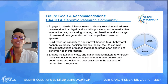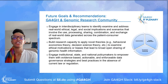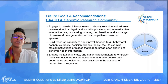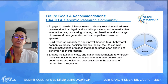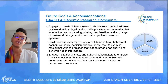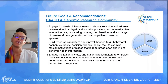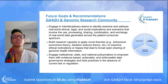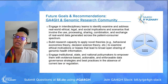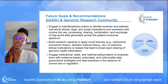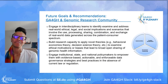GA4GH has put forth goals and recommendations on this topic. Some of these include engaging interdisciplinary teams to identify and examine real-world ethical, legal, and social implications; recommendations to build research capacity to apply novel theories such as behavioral economics to examine ethical motivations or biases that result from broad open sharing of genomic health information; and recommendations to engage institutional, state, and national policymakers in discussions to understand what evidence is needed, what actionable strategies can be taken, and what enforceable data governance strategies are needed in the absence of current law or regulation to safeguard individual privacy and other harms.